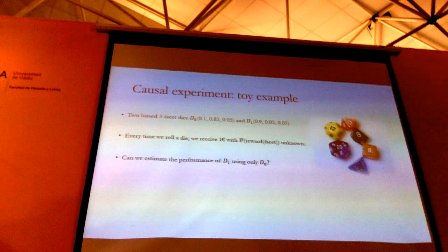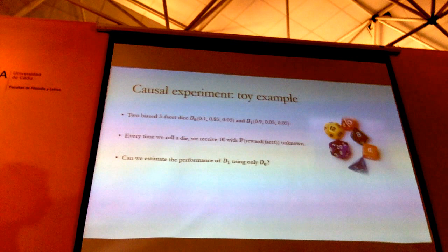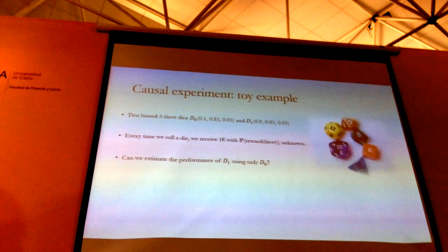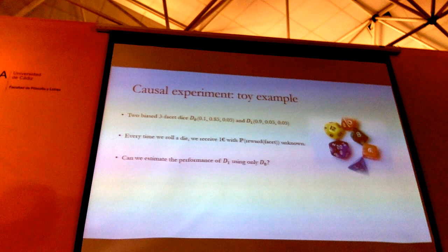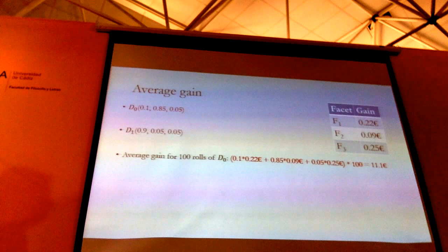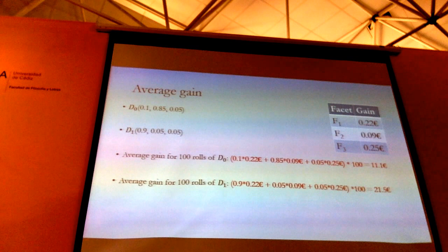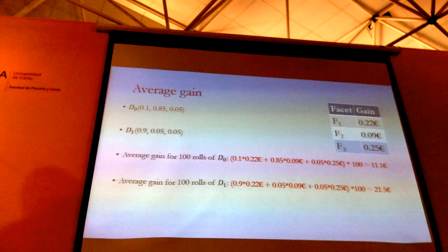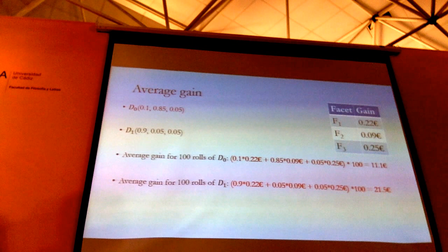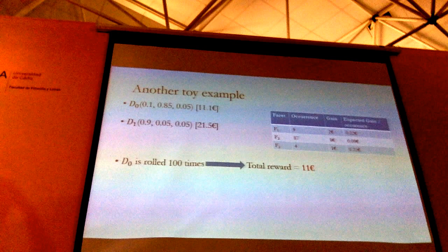Let's say you have two dice — a toy example. Die D0 falls 10% on the first facet, 85% on the second, and 5% on the third. Die D1 falls 90% on the first, 5% on the second, and 5% on the third. It's really the stochastic version of treatment A and treatment B from yesterday. Every time we roll a die, we receive some euros. The major difference with what was mentioned yesterday is that now you don't know the reward — you can only estimate it by repeated rolls. The question is: can I estimate the performance of die D1 using die D0? On average, D0 gives 11.1 euros. The average gain for D1 — you take the gain for each facet and multiply by the probability of that facet — is 25.5 euros. Even though I have never used die D1, just because it shares the same facets as die D0, I can estimate on average how much money I will make rolling die D1.